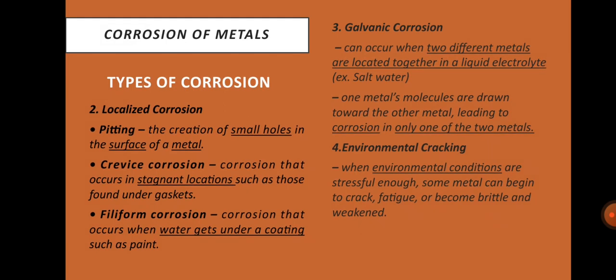Localized corrosion attacks only a portion of a metal structure. There are three types of localized corrosion. First is pitting — the creation of small holes in the surface of a metal. Crevice corrosion occurs on stagnant locations such as those found under gaskets. Filiform corrosion occurs when water gets under a coating such as paint. Galvanic corrosion can occur when two different metals are located together in a liquid electrolyte, such as salt water, where molecules of one metal are drawn toward the other.